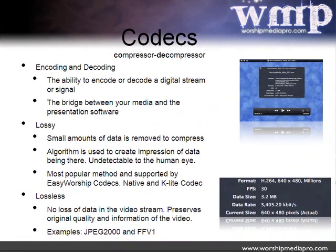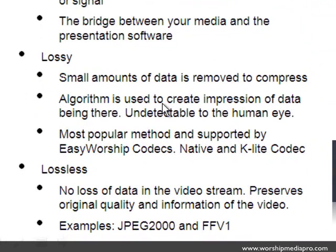A simple way to understand what a codec is: it's simply middleware — a translator. You have a person speaking one language, and the translator translates it so you can understand it. That translator is the codec. It's the one that's decompressing your MOV file or WMV file and presenting it through Easy Worship. Compression works by removing redundant data — black spaces, white spaces, redundant headers on the stream itself — and then through an algorithm it reconstructs this data to create the impression that nothing was lost.